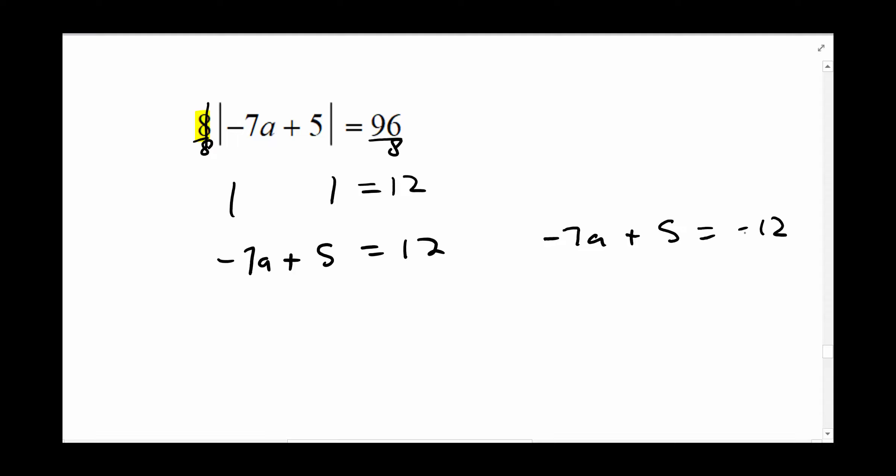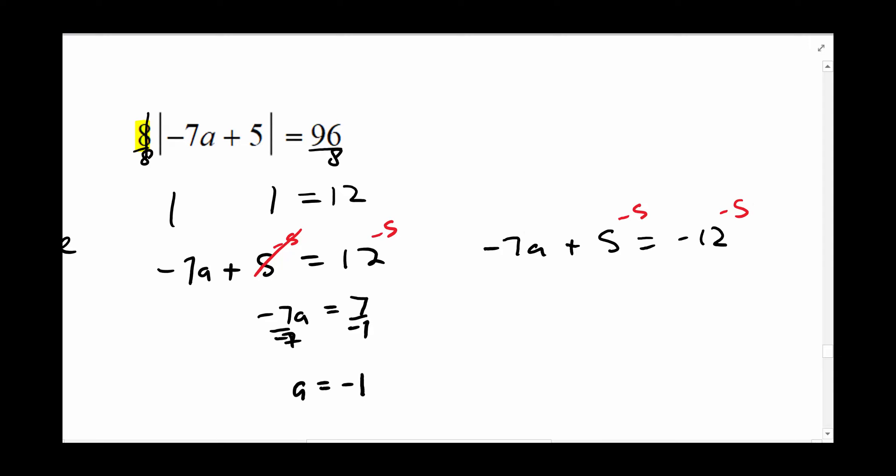Remember the third step. The third step is solve. So we're going to subtract 5 from both sides. I can do that over here too. That cancels. And now you have negative 7a is equal to 7. Divide both sides by negative 7. A is equal to negative 1.